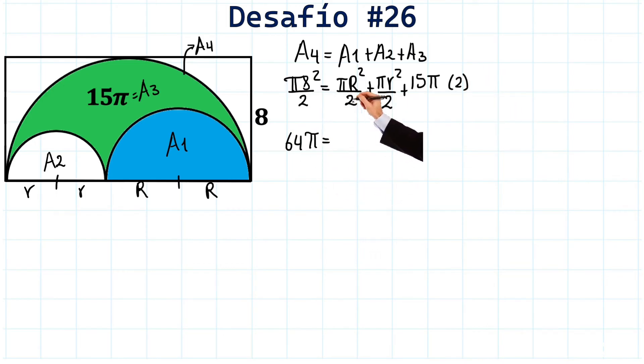These two simplifies with these two. And I have π times R squared. Very well. And here these two simplifies with these two. And I have π times r squared. And here 2 times 15 gives me 30π.